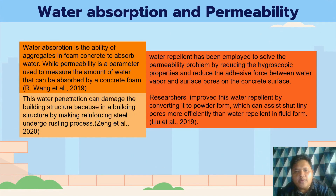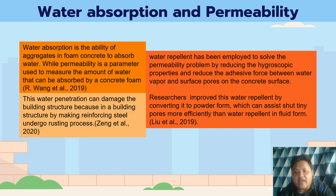Now we look at water absorption and permeability. Absorption is the ability of foam concrete to absorb water, while permeability is a parameter used to measure the amount of water that can be absorbed by foam concrete. Water penetration can damage the building structure because the reinforcing steel inside the concrete will undergo rusting when it contacts water. Researchers have proposed a solution using a water repellent material.